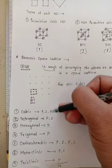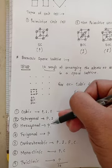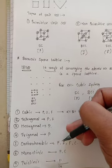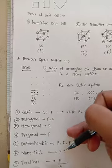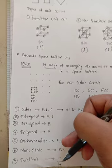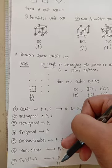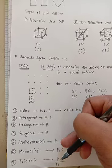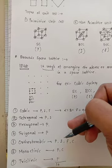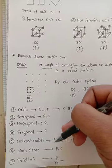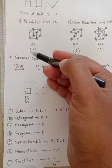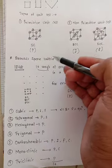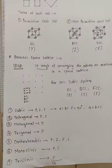Counting them: one, two, three, four, five, six, seven, eight, nine, ten, eleven, twelve, thirteen, and fourteen. These 14 types of unit cells or 14 arrangements are known as Bravais space lattices.